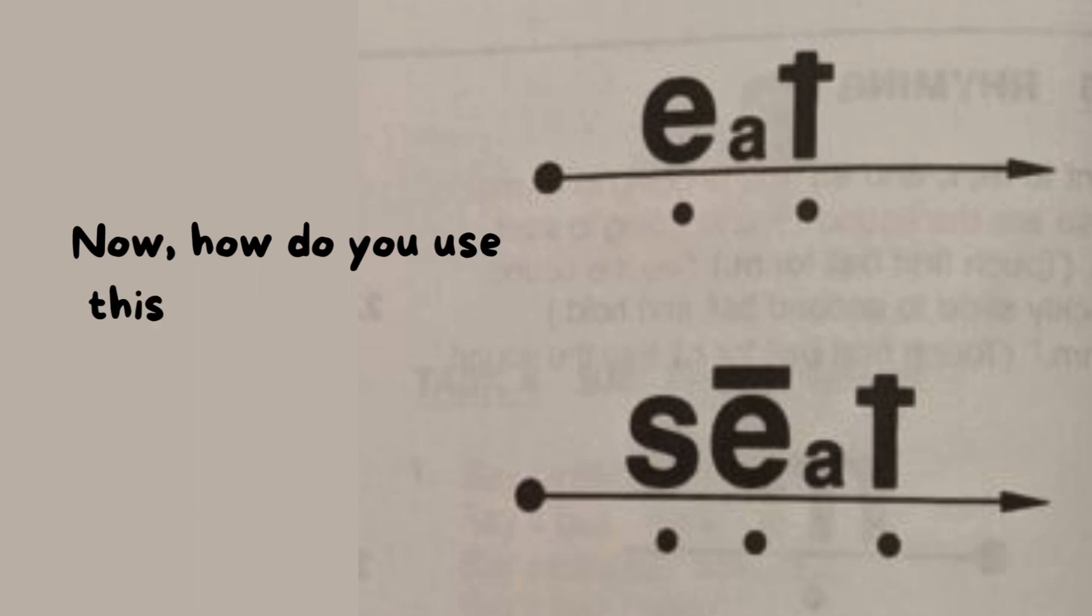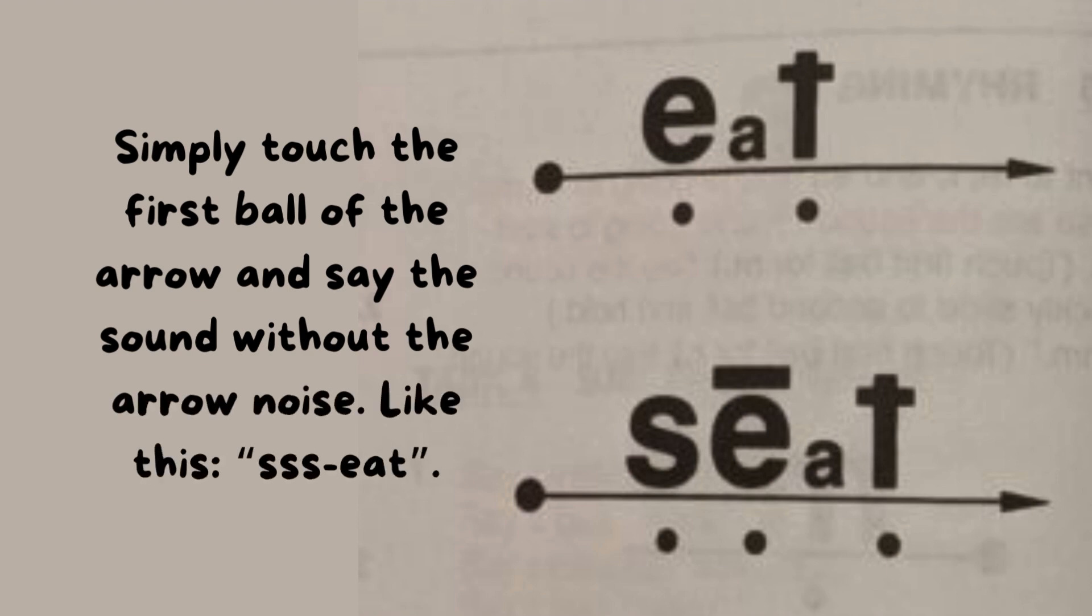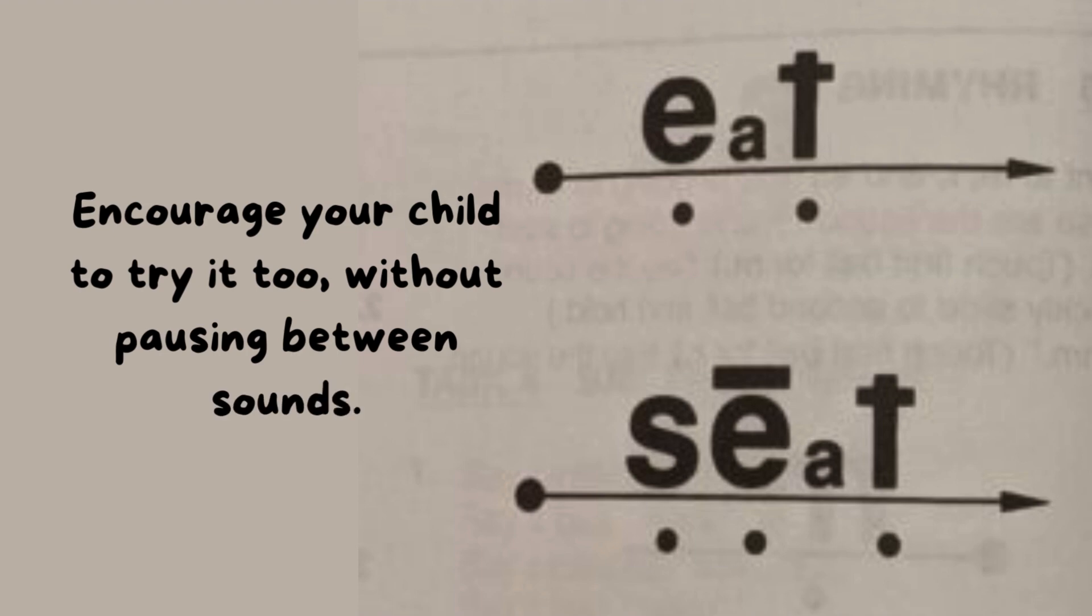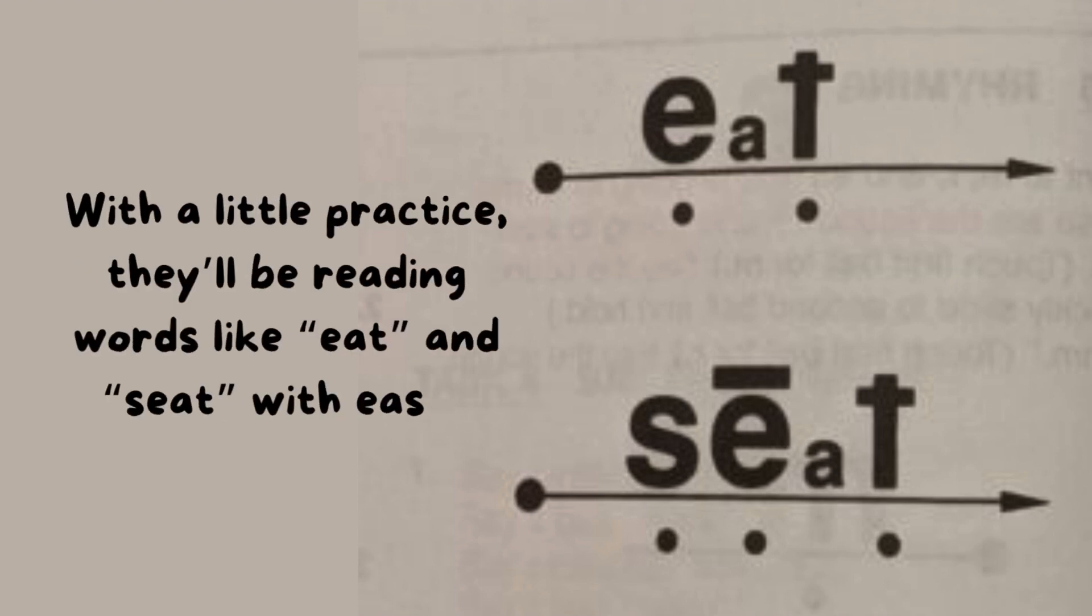Now, how do you use this page with your child? Simply touch the first ball of the arrow and say the sound without the arrow noise. Like this, s-eat. Encourage your child to try it too, without pausing between sounds. With a little practice, they'll be reading words like eat and seat with ease.